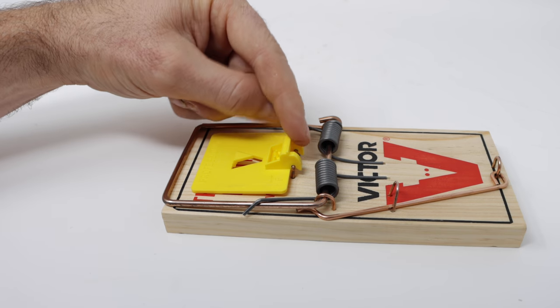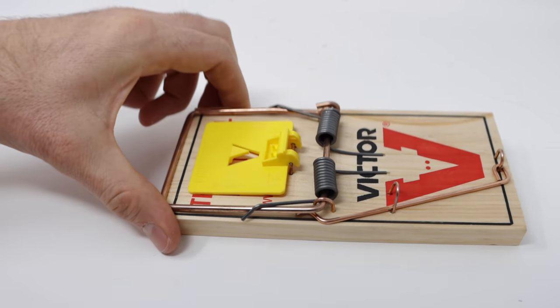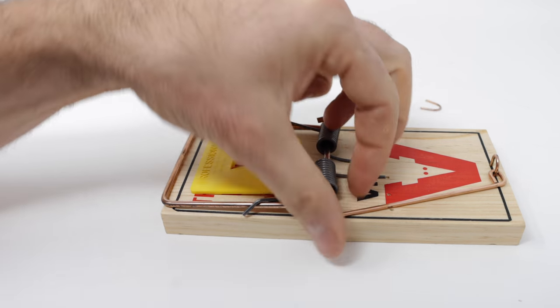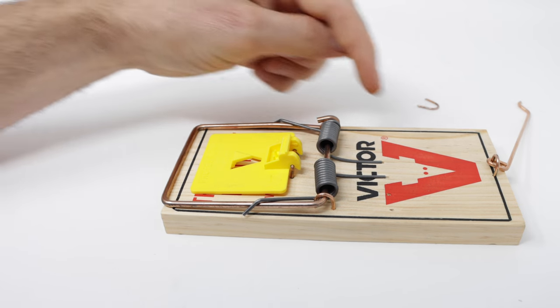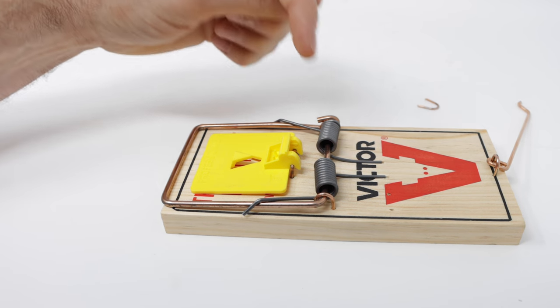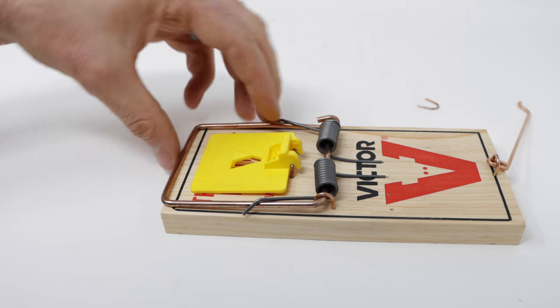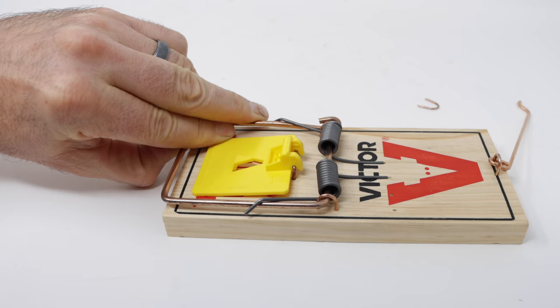For anyone who hasn't set one of these before, here's our standard Victor rat trap. When it comes out of the package, it has a staple that holds down the setting arm right here. We'll pull that back. It's mounted to a wooden base. There's two powerful springs. There's different trigger options. For this one, I'm using the expanded plastic. And on those springs, there's a kill bar.